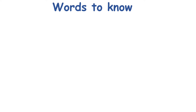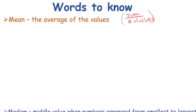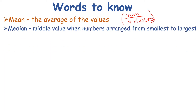First, let's look at some words we need to know. The first word is the mean — that is the average of the values. To find an average of a set of numbers, you add all your numbers together and then divide by the number of values that you have. That is your mean. Next we have the median — that is the middle number.